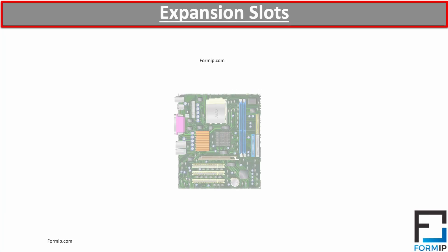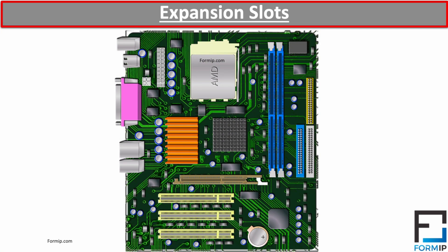Now, let's get back to our computer bus slots. All motherboards are equipped with input and output bus slots, usually located at the bottom back of the motherboard. They are also called expansion slots, because these slots are used to expand the computer's capabilities. For example, if the motherboard doesn't have a built-in sound card, you can add one by inserting it into one of these PCI slots, giving your computer the ability to produce sound.